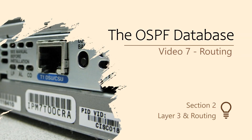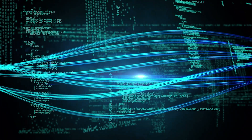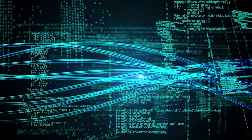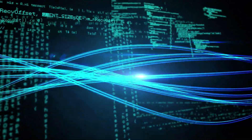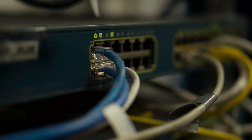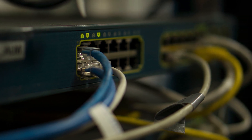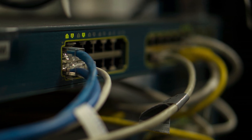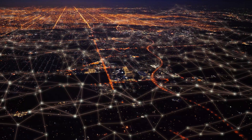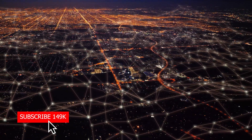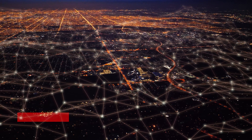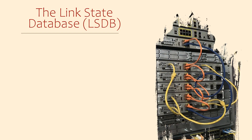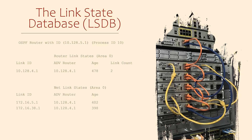When the OSPF process starts, the router creates a database called the Link State Database, or LSDB. This stores OSPF topology information — meaning routers and the links that join them. This is the map of the network, with paths from one router to another. The first thing the router adds is its own OSPF information, such as its router ID and any connected routes. As neighbor relationships form, the router adds more information.